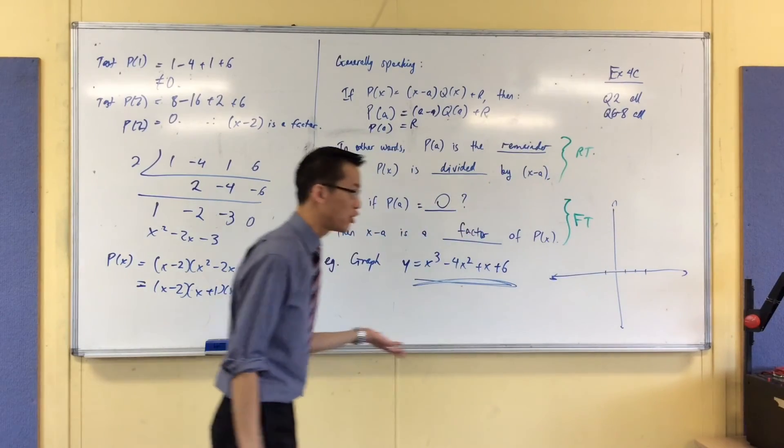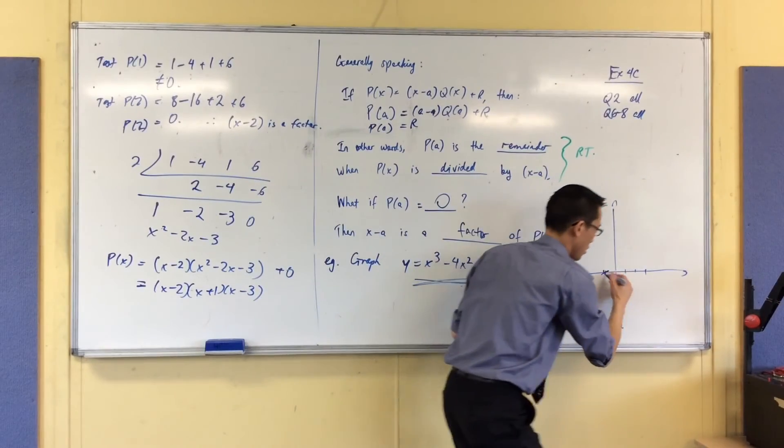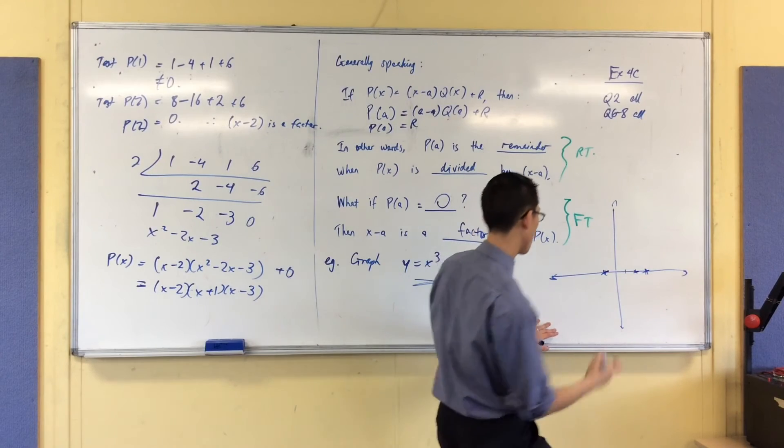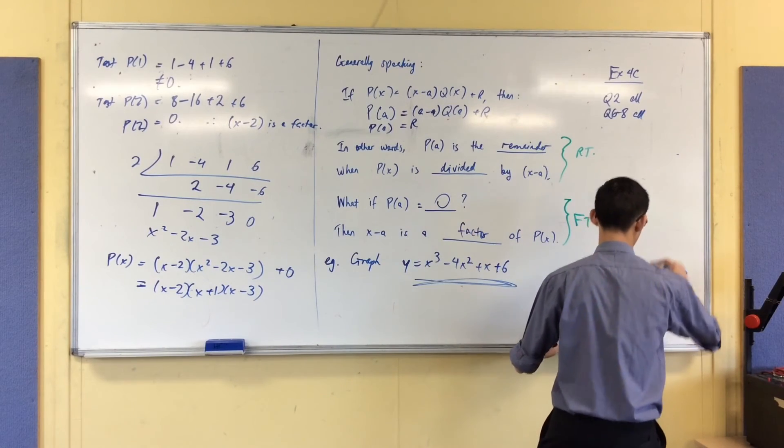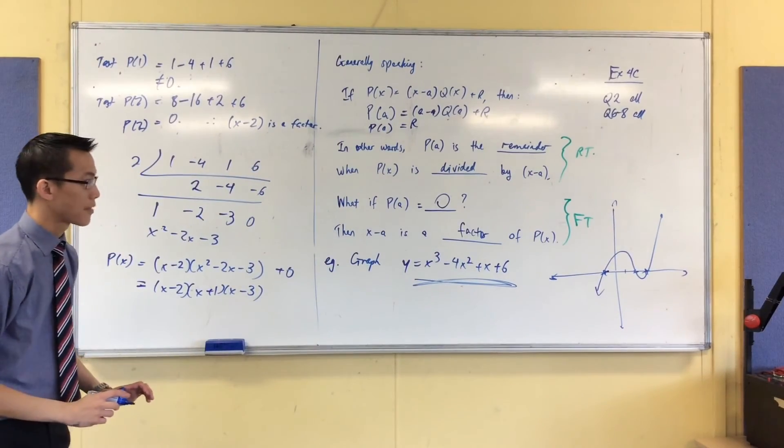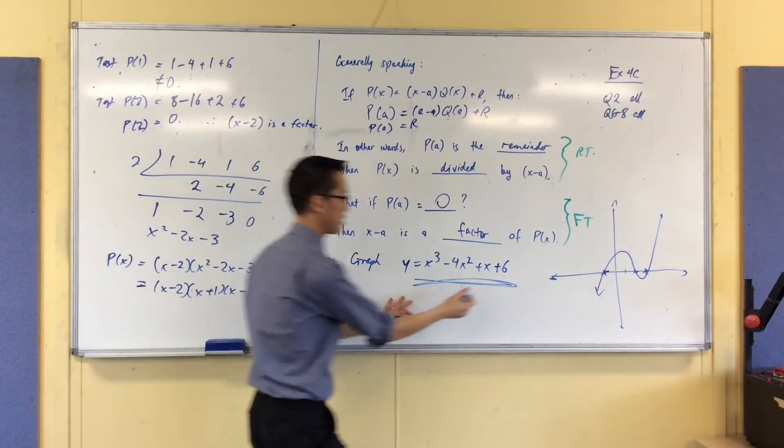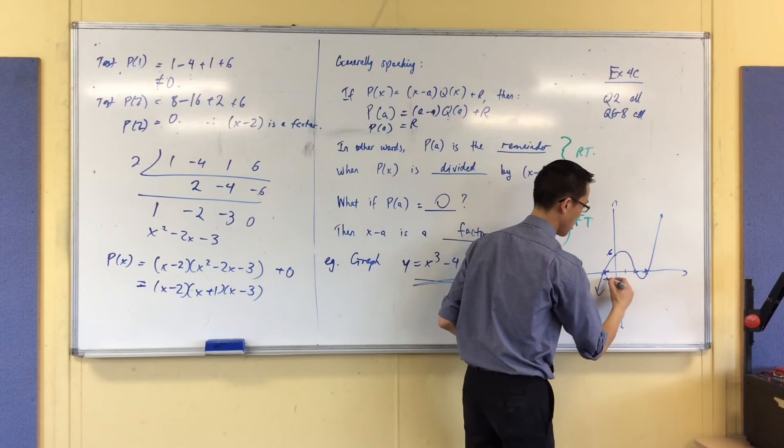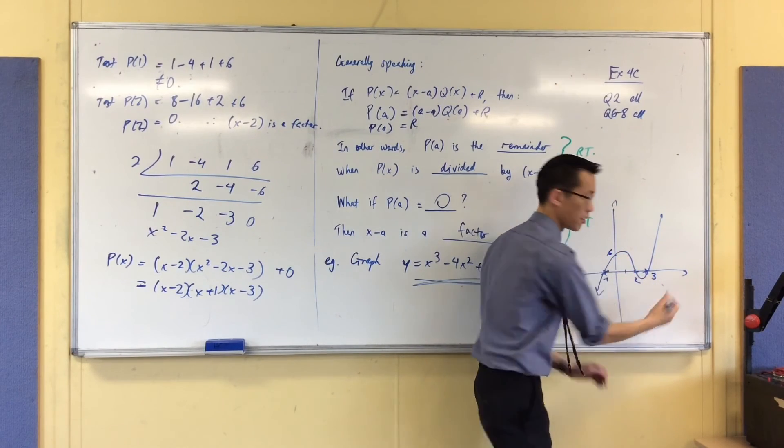So, now I just need to draw a cubic that's going to pass through negative 1, 2, and 3. So, it looks to be something like this. It's a positive cubic. Like that? Is that okay? That's plus 6. And I know where the y-intercept is, because it's just that guy.